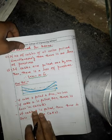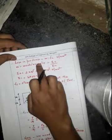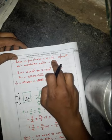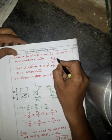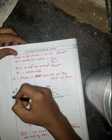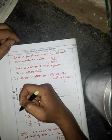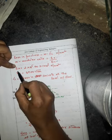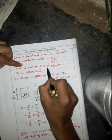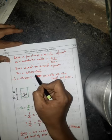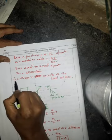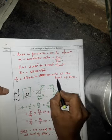Now, how to calculate the loss? The loss in pre-stress is calculated as m × fc (in N/m²), where m is the modular ratio — that is, the modulus of elasticity of steel divided by the modulus of elasticity of concrete. Es can be taken as 2 to 2.1 × 10⁵ N/m², and Ec from IS code is 5700√fck. The important question is how to get fc, which is the stress in concrete at the level of steel.